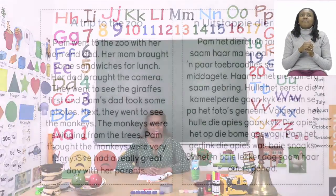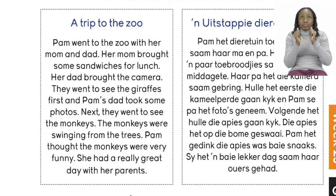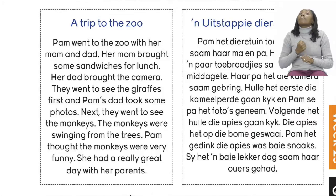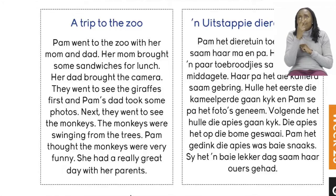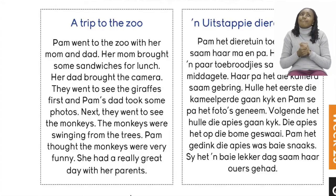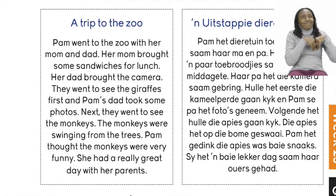Let's take a look at our comprehension and read together. It says a trip to the zoo. Pam went to the zoo with her mom and dad. Her mom brought some sandwiches for lunch. Her dad brought the camera. They went to see the giraffes first and Pam's dad took some photos. Next they went to see the monkeys. The monkeys were swinging from the trees. Pam thought the monkeys were very funny. She had a really great day with her parents.